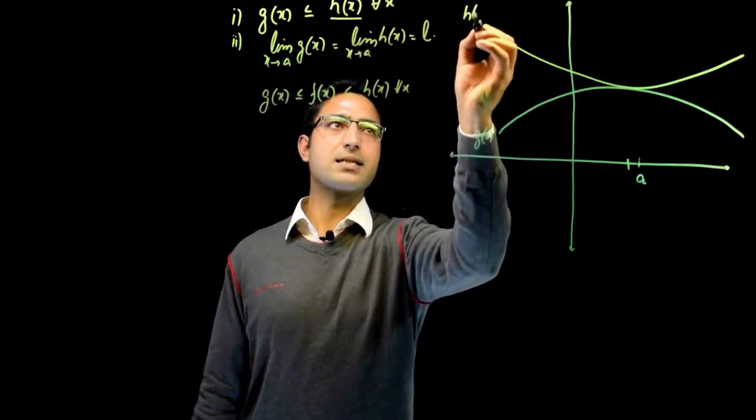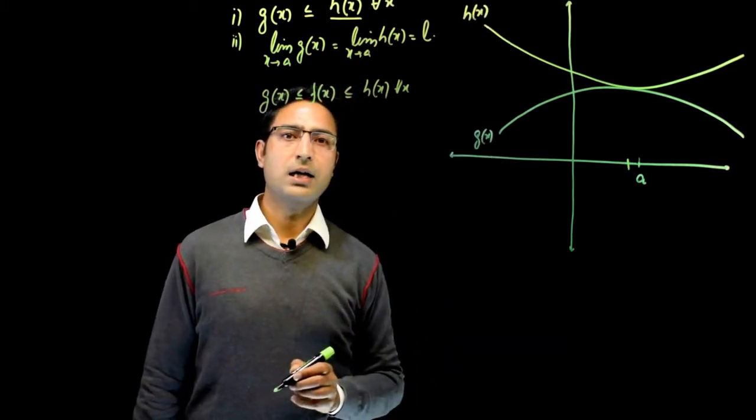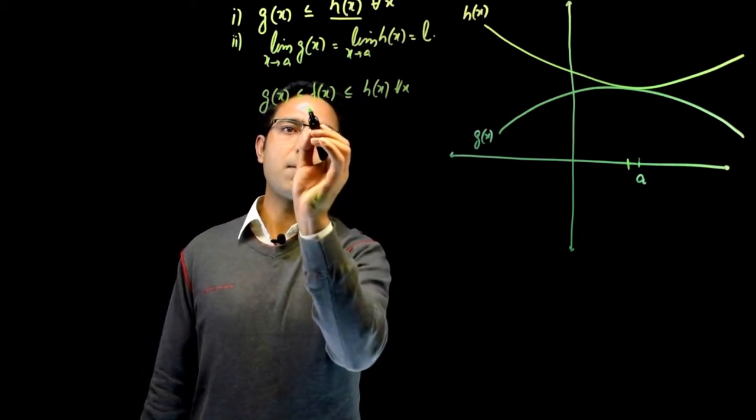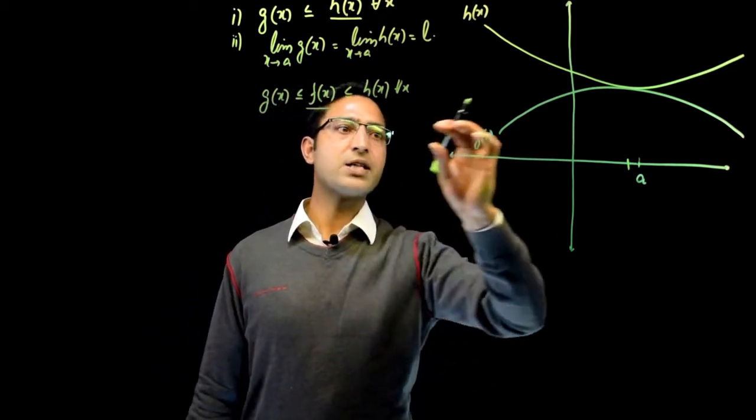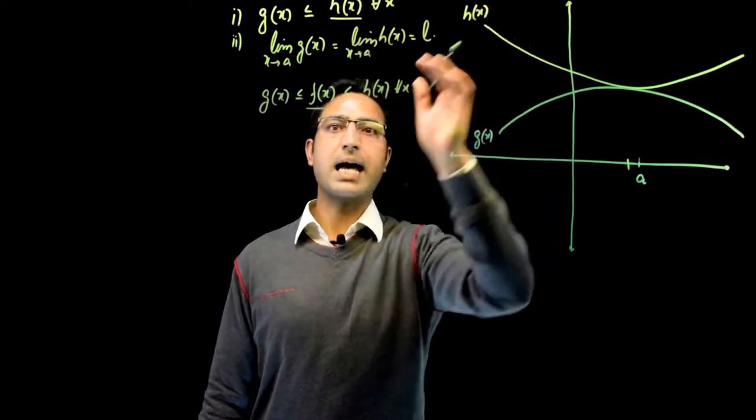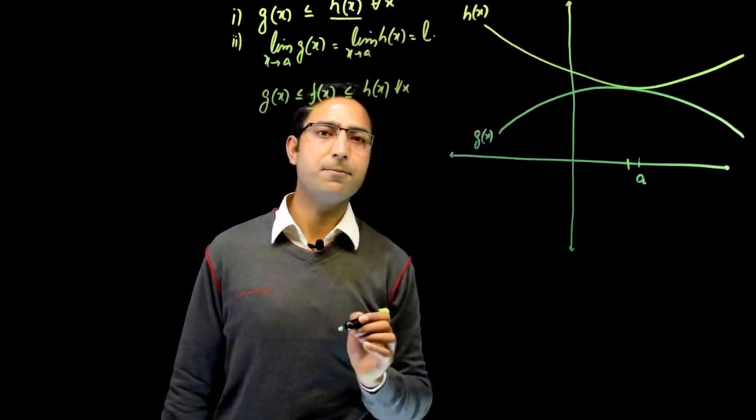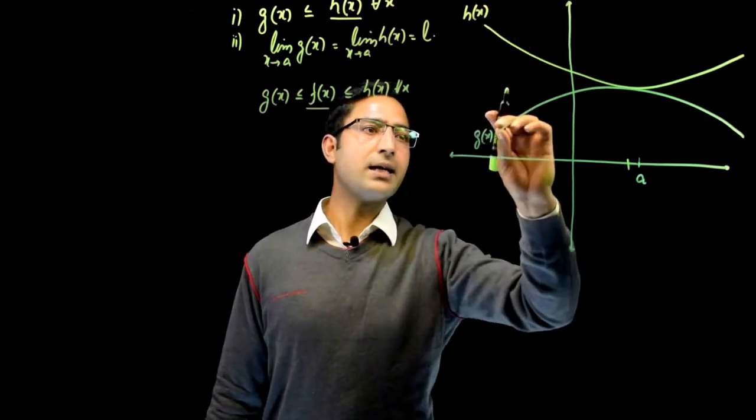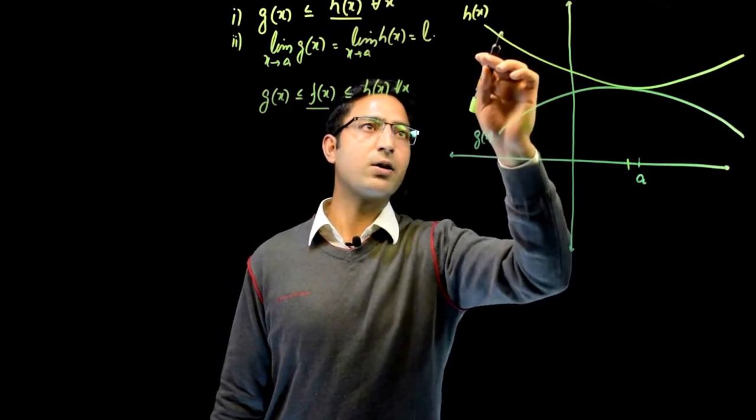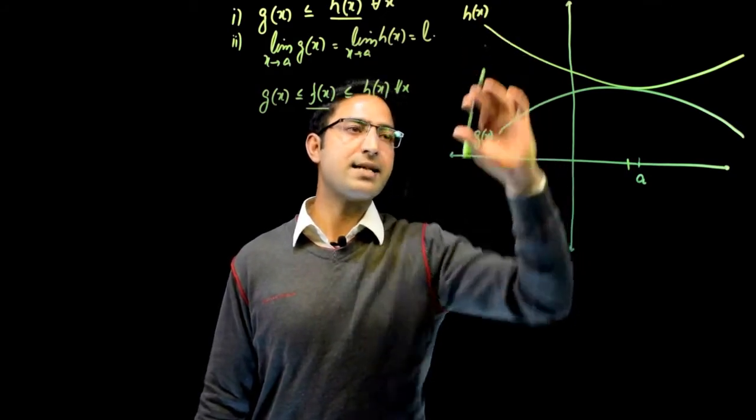Now, we will take another function, f(x), with the condition that this f(x) lies between g(x) and h(x) for all values of x. If we have to draw the graph of f(x), then the graph of f(x) will lie between g(x) and h(x). So it can come from here, here, or here, from anywhere in between h(x) and g(x).